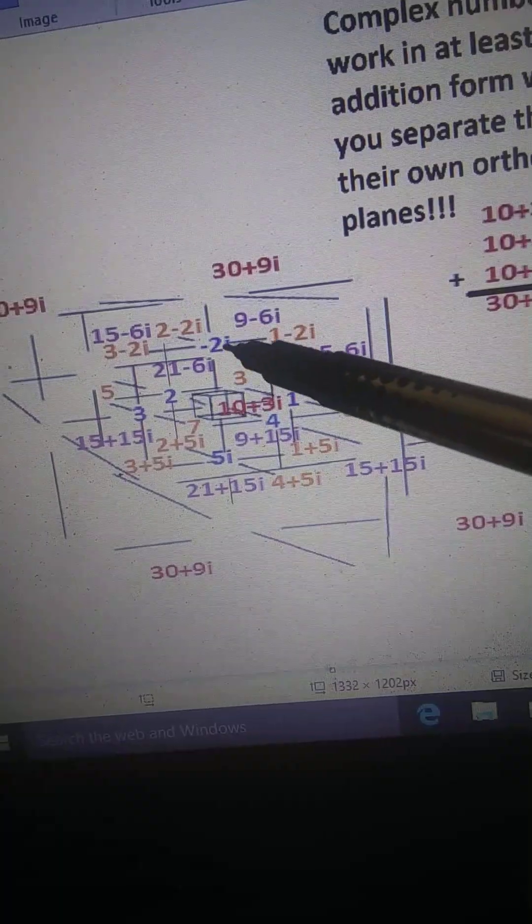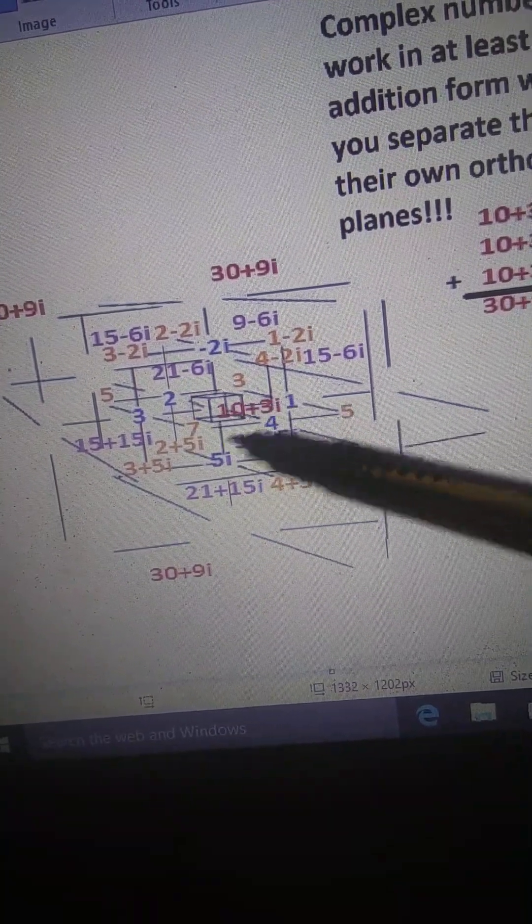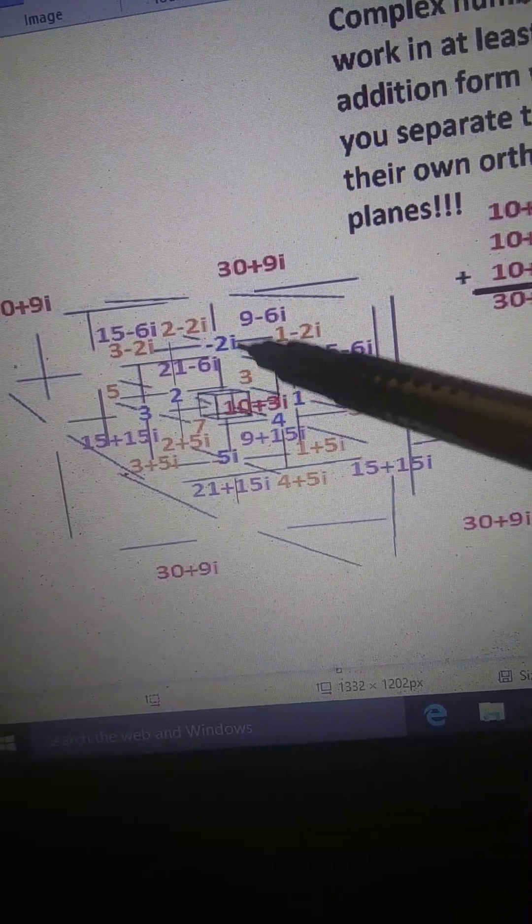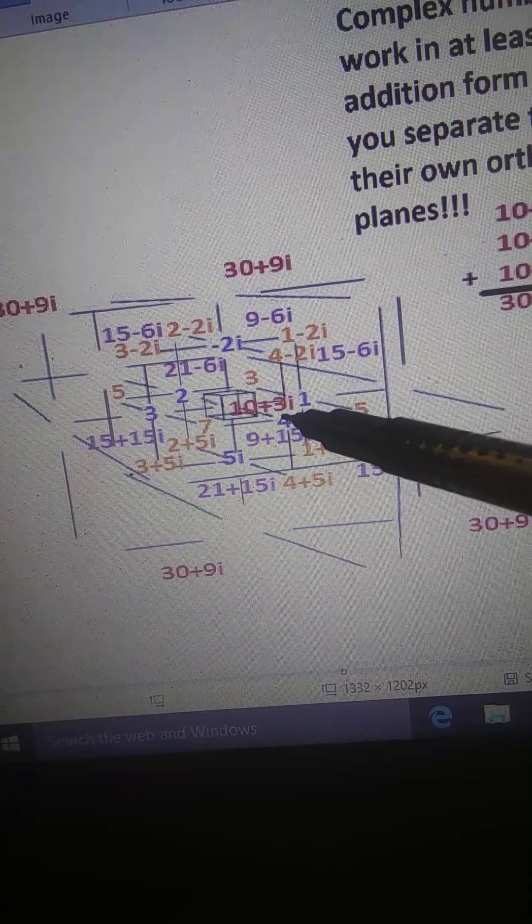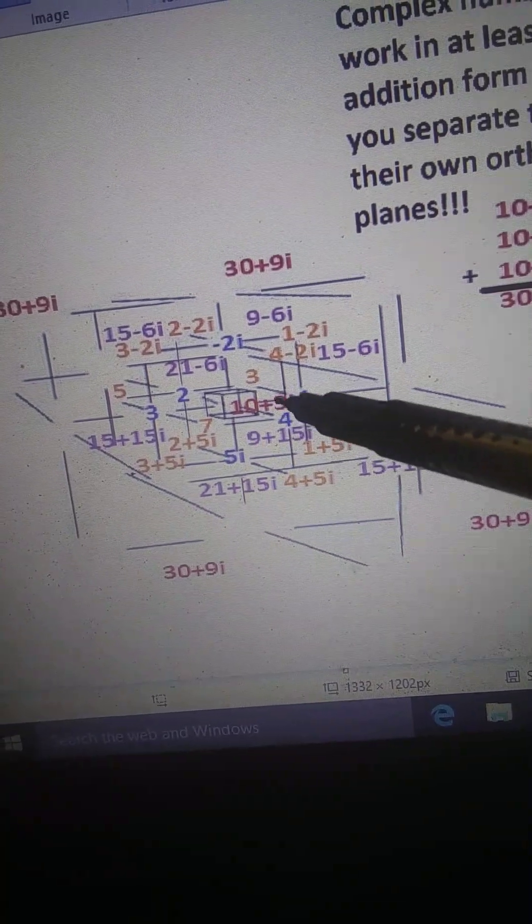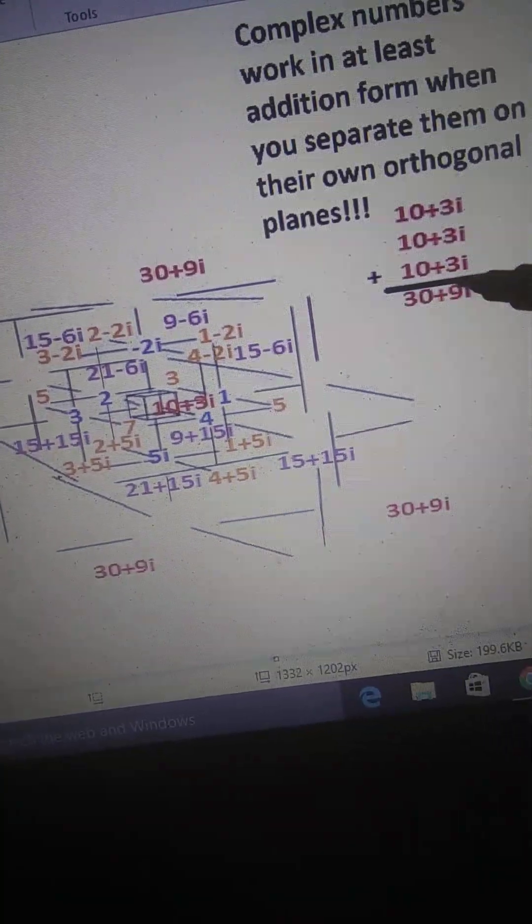Separate the imaginary components from the real number components of the primary numbers. When they come together they create 10 plus 3i to the third power, to the third, three times.